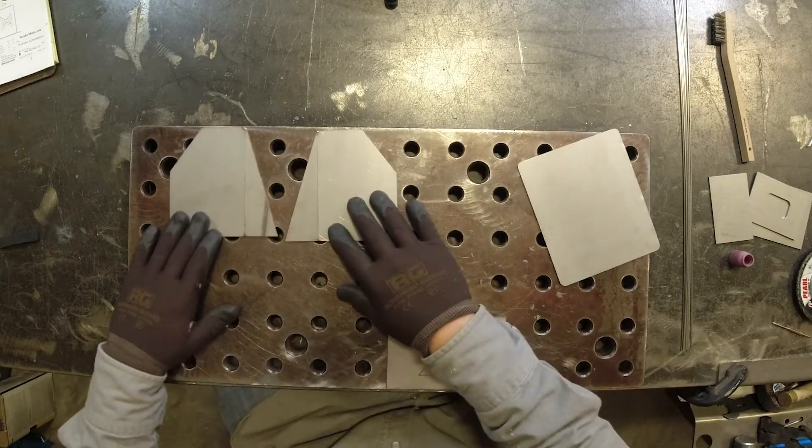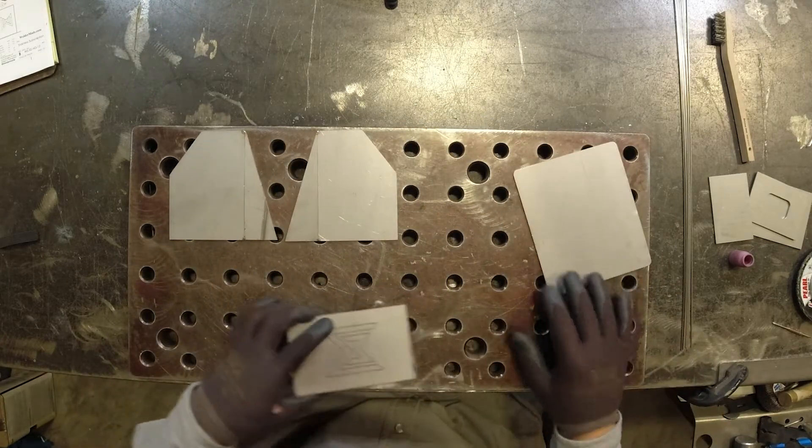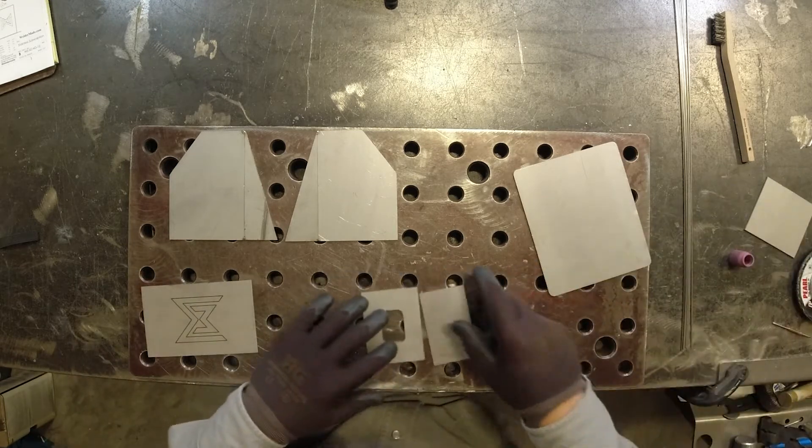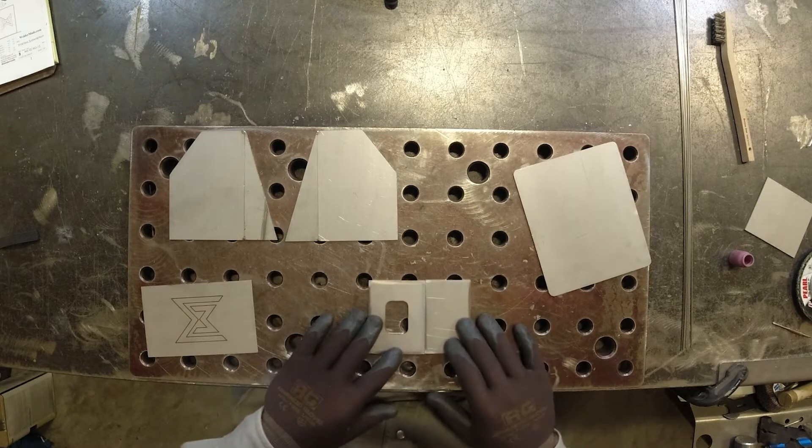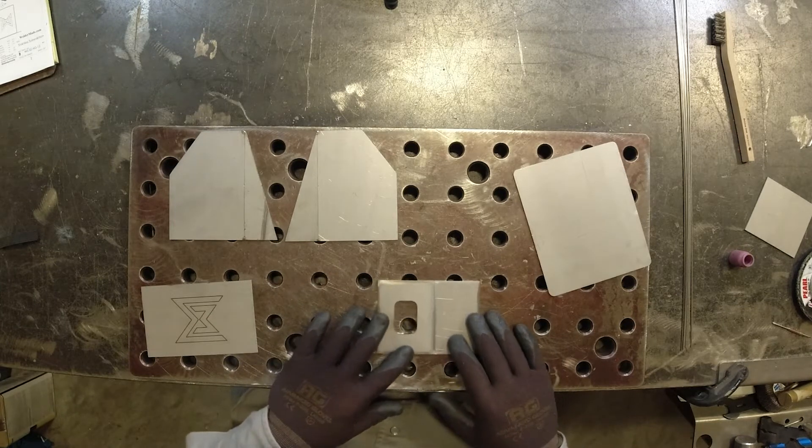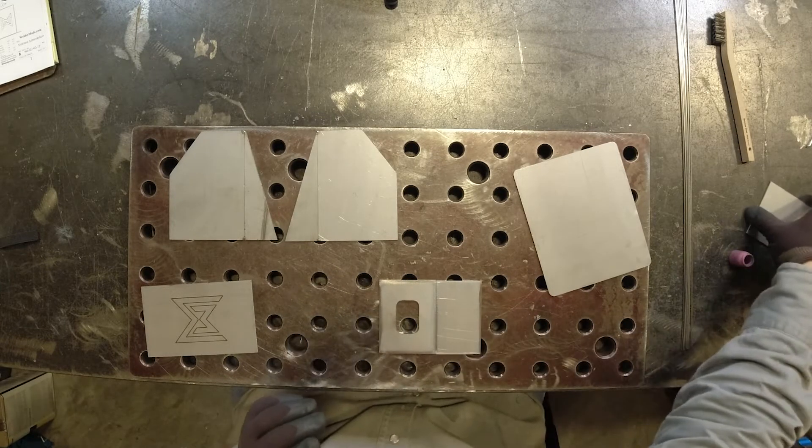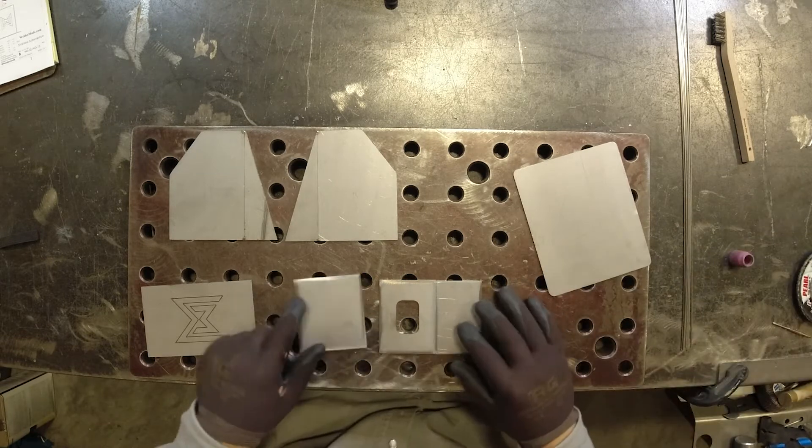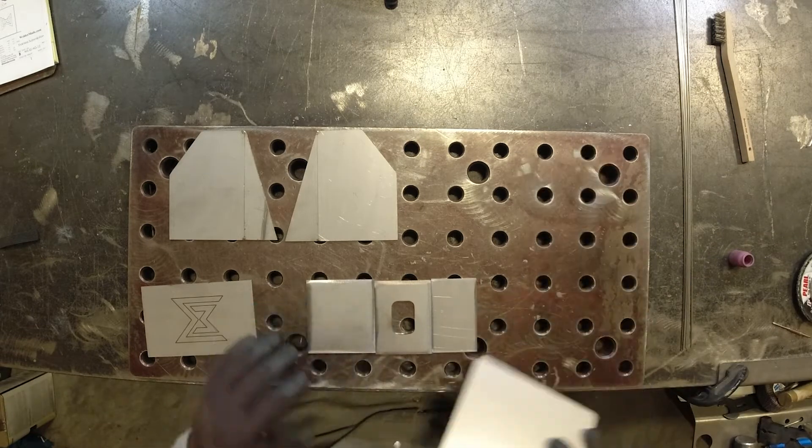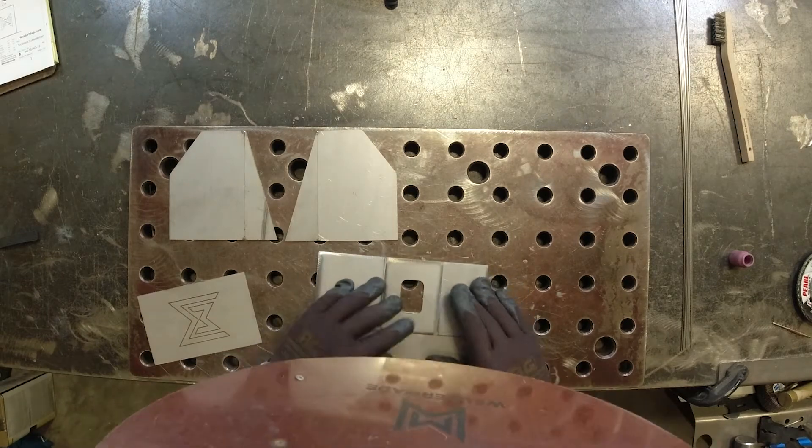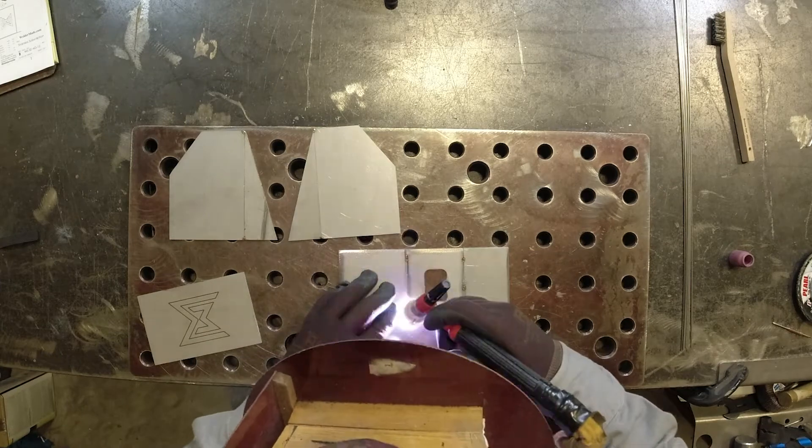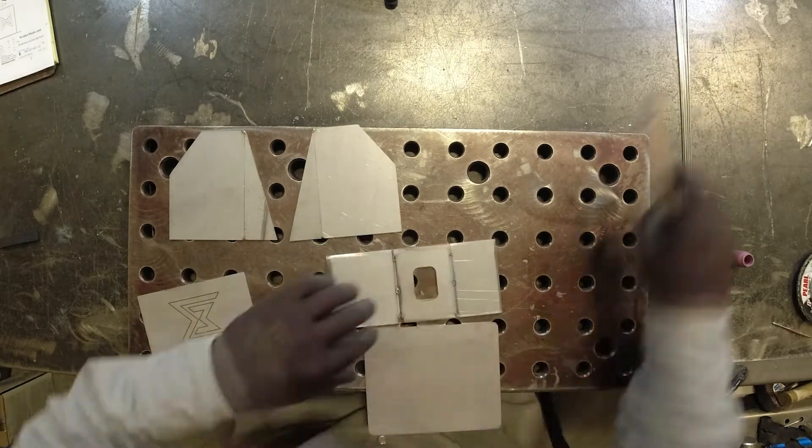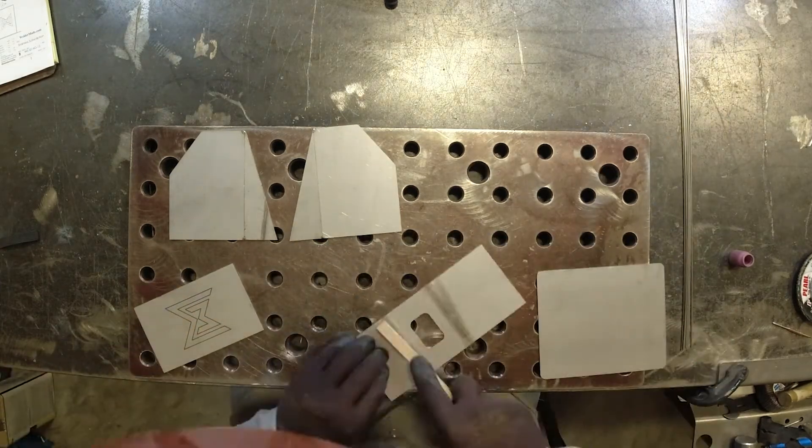Now we're going to start tacking parts three, five, and six together. We're going to flip them around and tack them on the backside. Just nice little fusion tacks. Make sure they're nice and straight. Nice and tight butt joints, and we'll bend those to the angle desired here in a minute. So if those are tacked on the backside nice, those are going to bend really good in the future.